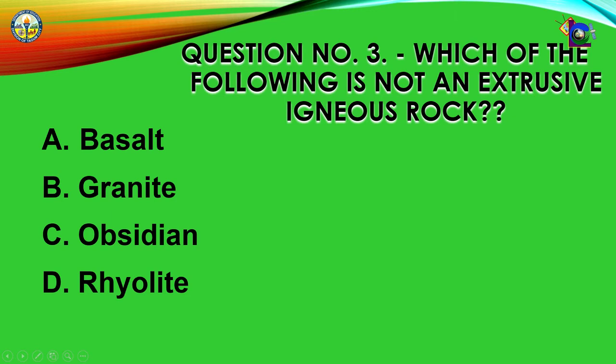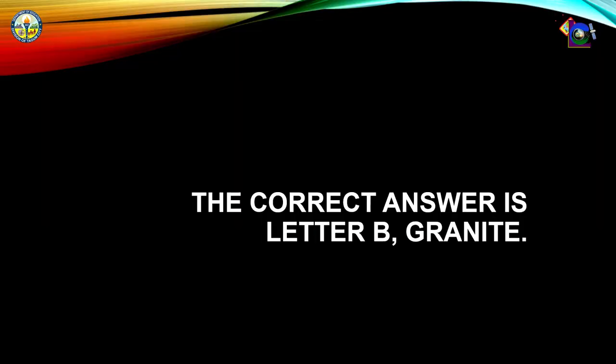Number 3: Which of the following is not an extrusive igneous rock? A. Basalt, B. Granite, C. Obsidian, D. Rhyolite. The correct answer is letter B — Granite.